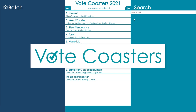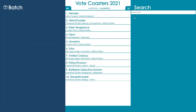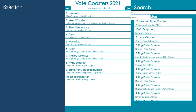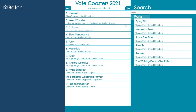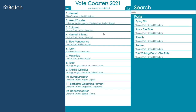Here's how to use the Vote Coasters desktop portal in 60 seconds. Click the search box to search for roller coasters or theme parks. Drag roller coasters from the search box to your list.